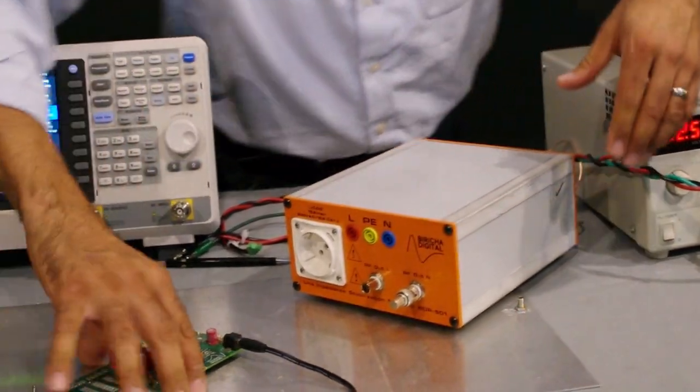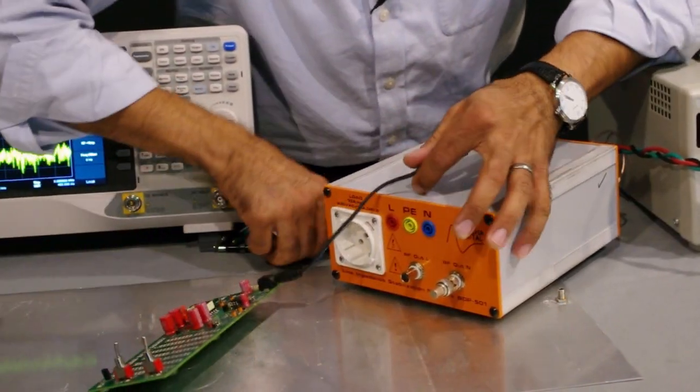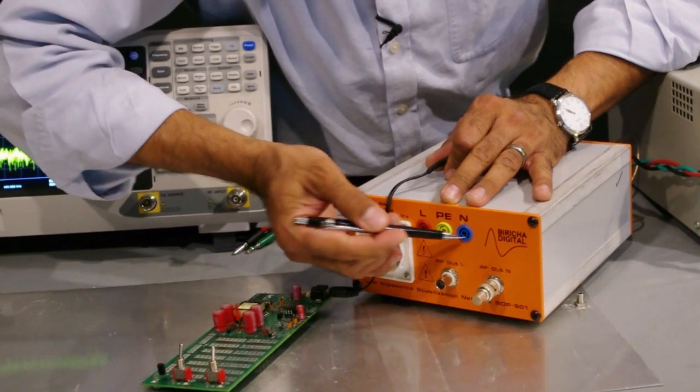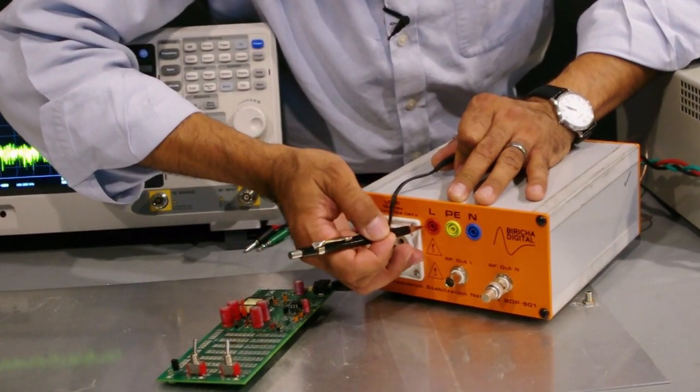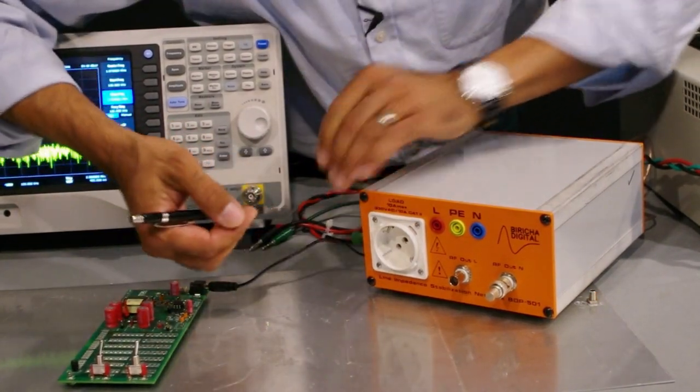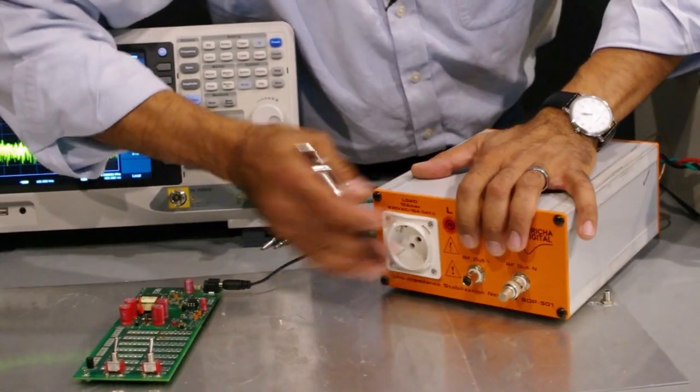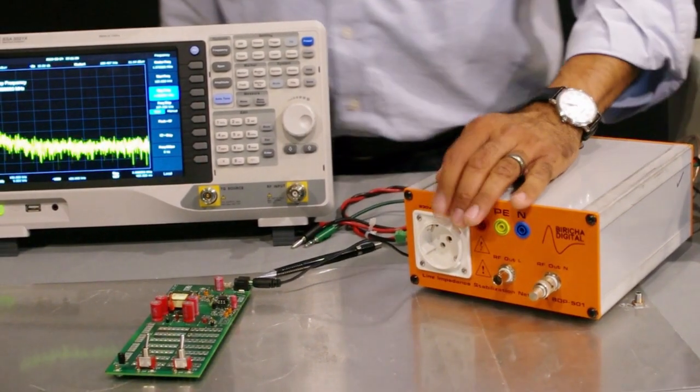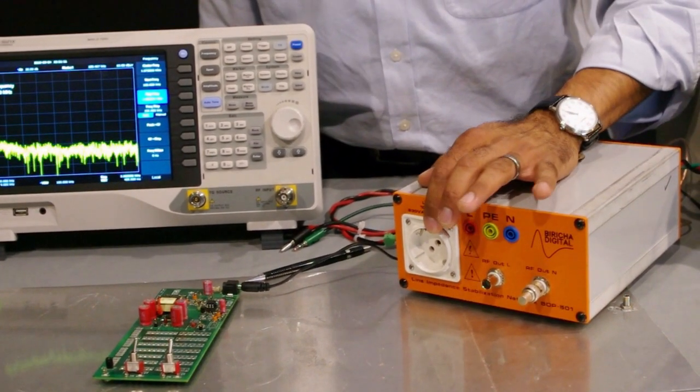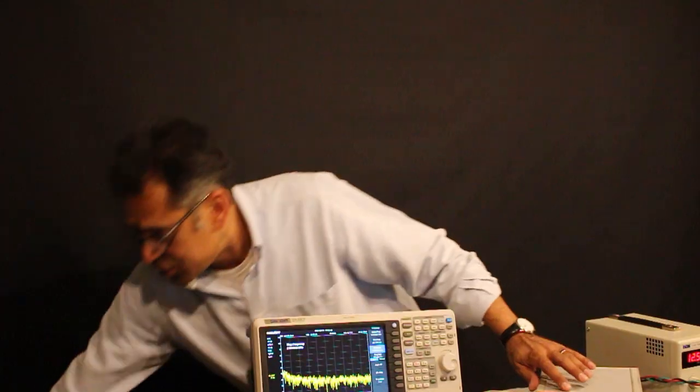And then as I said, for a three-wire system with DC you will connect these to here. For two-wire you only need these two, and if you've got an AC system then obviously you use the Schuko that is available in front of the LISN. But please be aware that if you're using an AC system then you must have an isolation transformer.